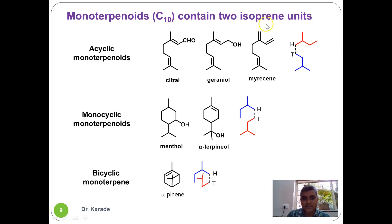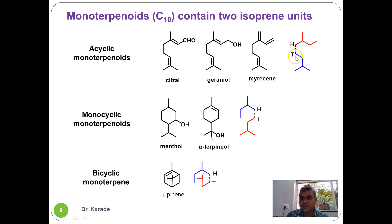Monoterpenoids contain two isoprene units and can be acyclic, monocyclic, or bicyclic. Citral, geraniol, and myrcene are examples of acyclic monoterpenoids, each made up of 10 carbon atoms. Ignoring double bonds and functional groups, we can identify two isoprene units of five carbons each connected through head-to-tail linkage — the branched portion (head) connected to the unbranched portion (tail). In monoterpenoids we find at least one head-to-tail linkage.